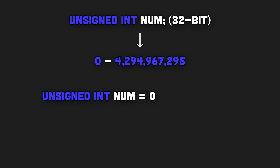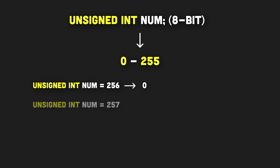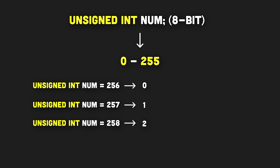Let's demonstrate this on an 8-bit unsigned integer to understand it better. The range of numbers in case of 8-bit unsigned integers is from zero to 255. If we assign 256 to this 8-bit unsigned integer, it will overflow to zero. If we set it to 257, it will overflow to 1. If we set it to 258, it will overflow to 2. And so on.